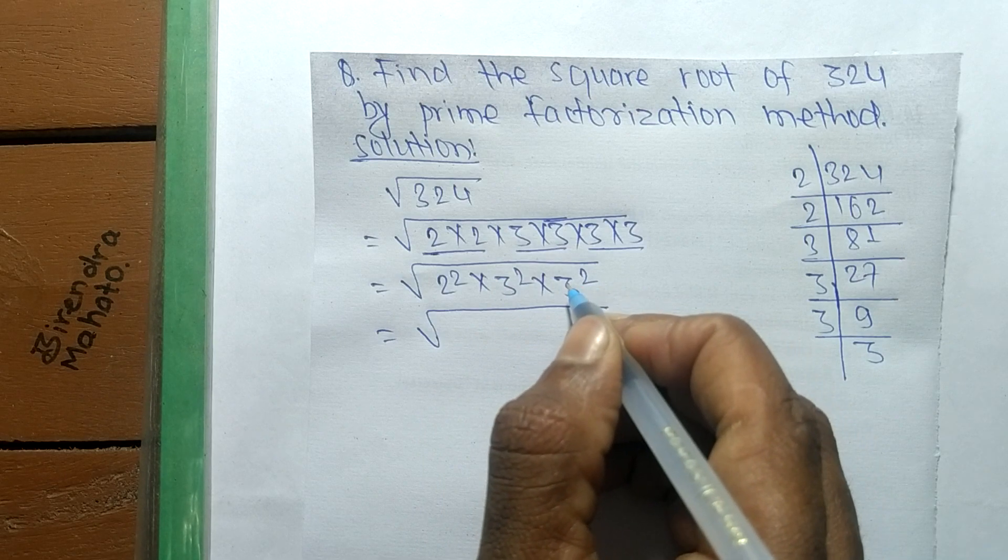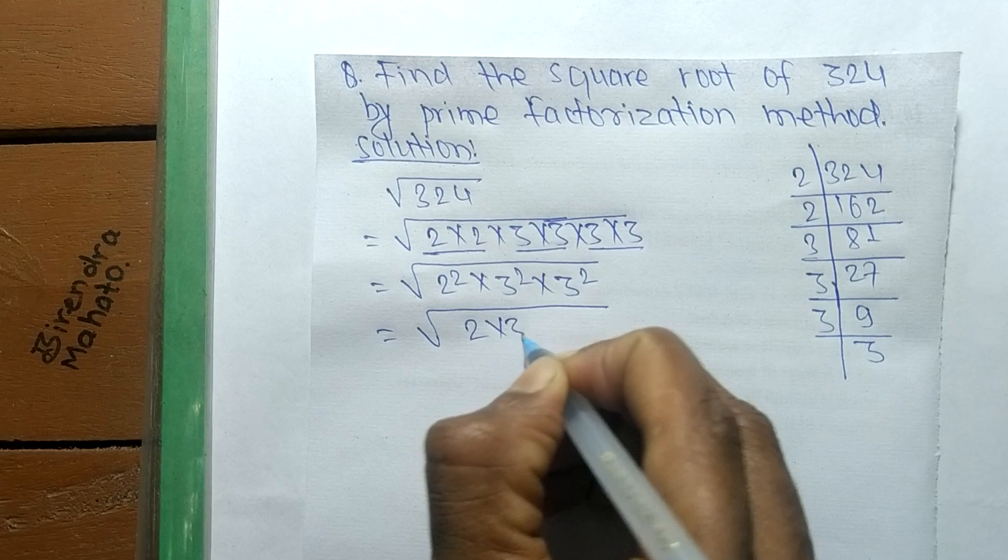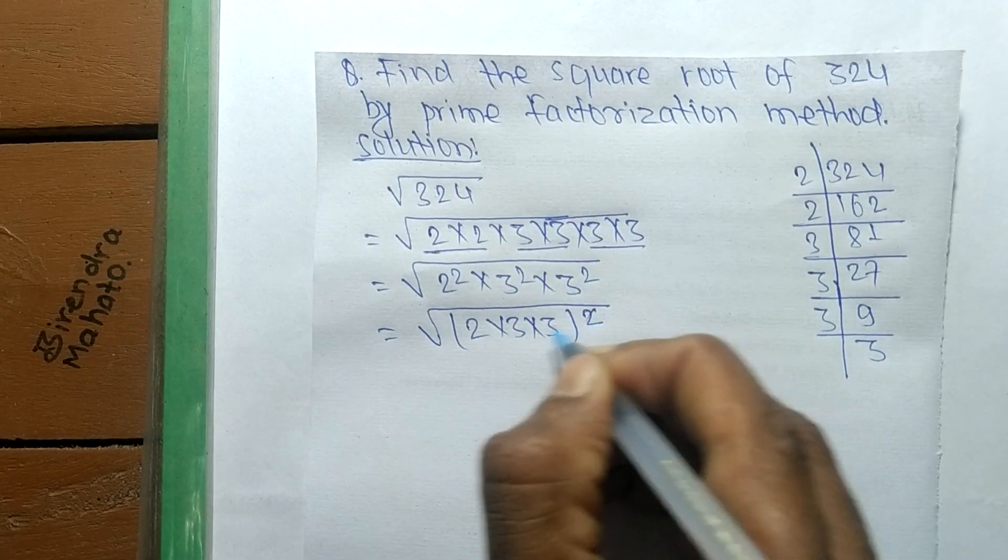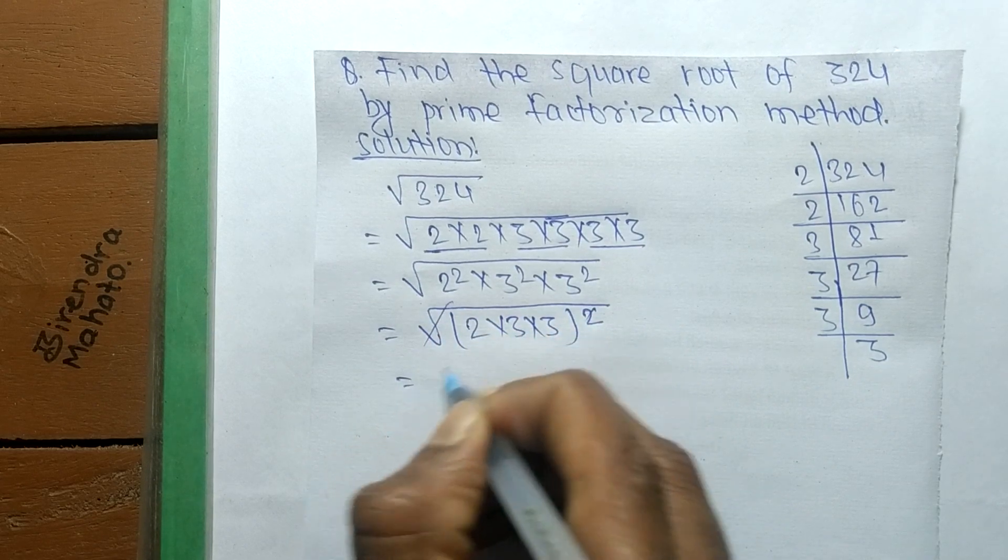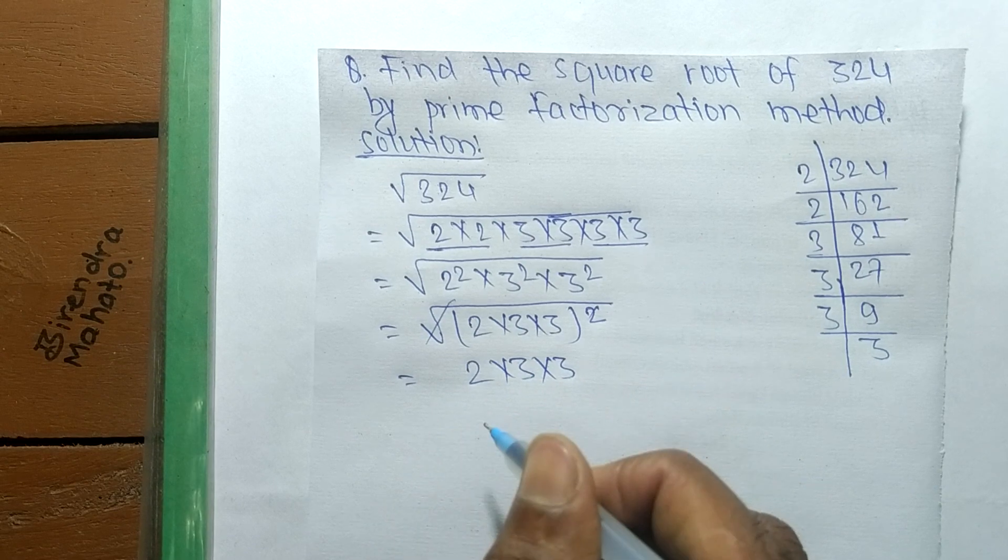We take the square as common, so it becomes (2 × 3 × 3)². Now the square and square root cancel, and we're left with 2 × 3 × 3.